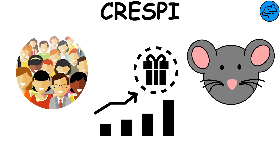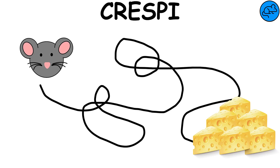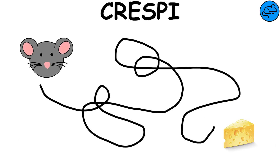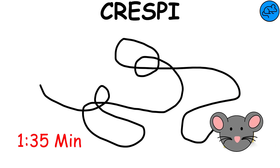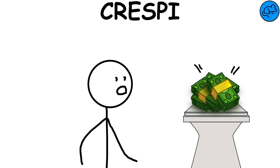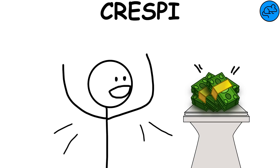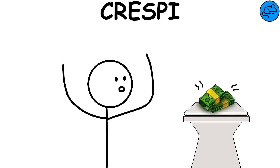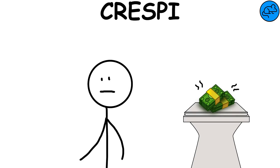Crespi effect. The Crespi effect is when rewards change and people or animals react differently. For example, if you give a mouse more food than usual, the mouse might do the next task faster. However, if you give less food than usual, the mouse may complete the task more slowly. This also happens with people — if someone gets an unexpected reward at work, they might do their job better; if the reward becomes smaller, they may lose some motivation.